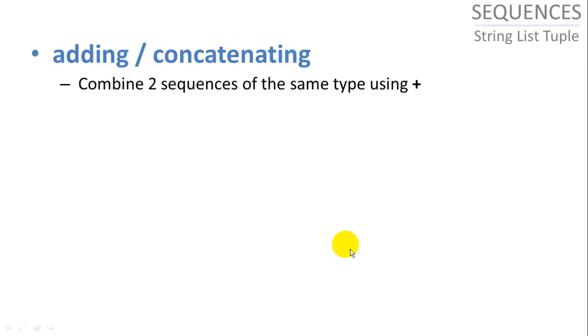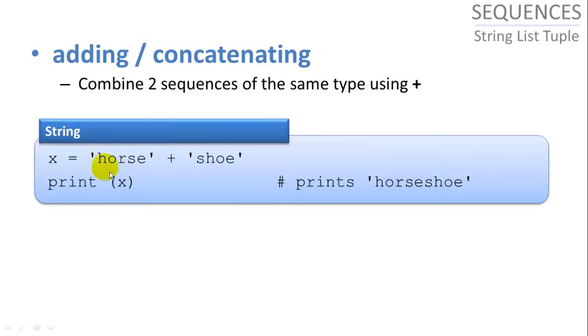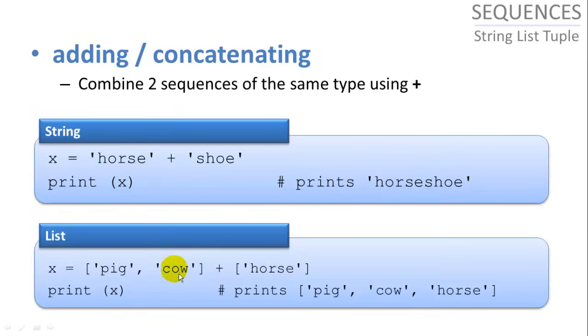Adding and concatenating we can do using the plus symbol. So we can combine two sequences of the same type only. So if we have two strings that we want to combine, we can use a plus sign to add them together. And if we have two lists we want to merge together, we can use the plus sign and we'll give us one list with three items in it.